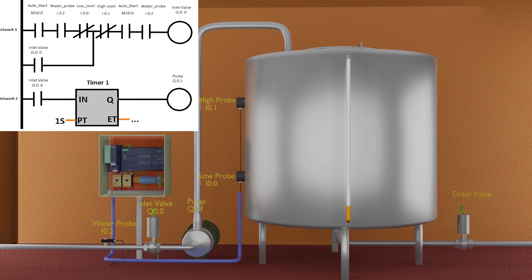This means that if we turn on auto start bit M10.0 from HMI and water probe I0.2 is sensing water in the inlet pipe and water level is below than the low level probe I0.0, it will hold on the inlet valve Q0.0 and water comes towards the pump.